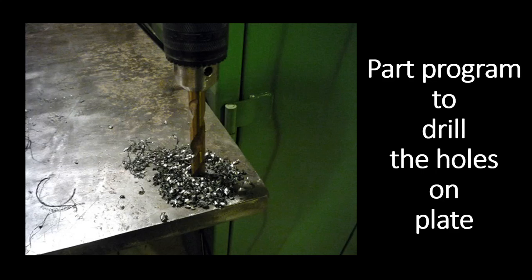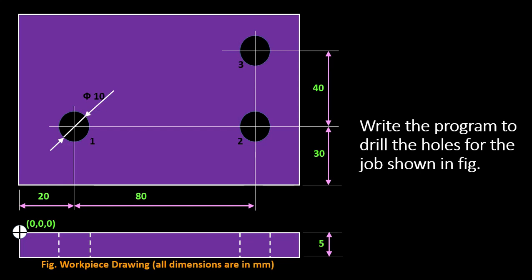Welcome to YouTube channel MC Tech Know How. Today's topic is a part program to drill holes on a plate. I have taken a plate and written the dimensions and locations of the holes. There are three holes to be drilled with a diameter of 10 mm, all dimensions in mm. The plate thickness is 5 mm. The first hole is at 20 mm in the X direction and 30 mm in the Y direction.